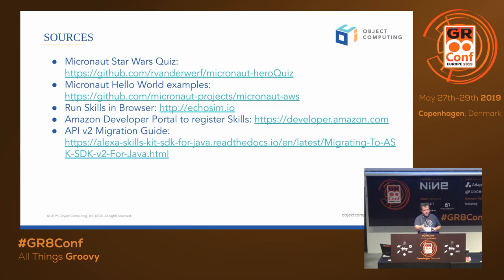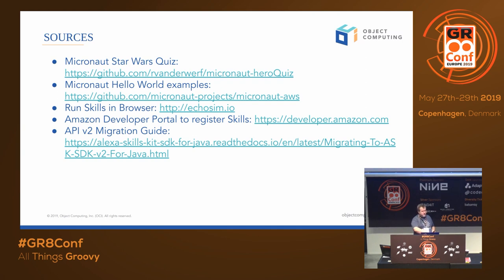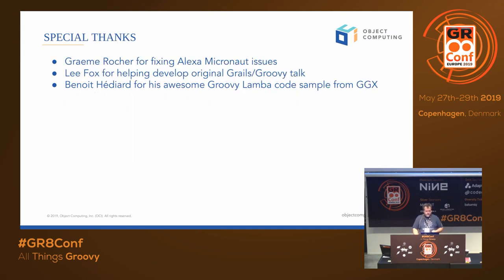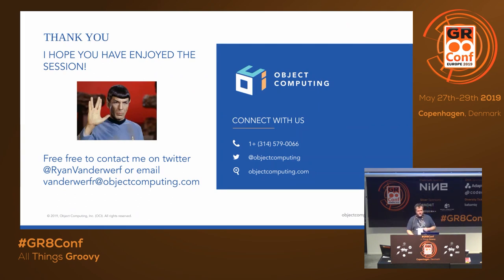Here are some sources for more information and links to all the sample code — I'll share these slides with everyone. If you're trying to migrate something old made with the V1 API, there's a migration guide that's helpful — docs aren't all that great yet, but it'll give you a clue how the new builder-based API works. Special thanks to Graham Roche for helping fix the last issues, my buddy Lee Fox for helping with the original Grails talk, and Benoit for doing the first Groovy Lambda example. Thanks a lot everybody — if you have any questions, I'll be out by the OCI table.